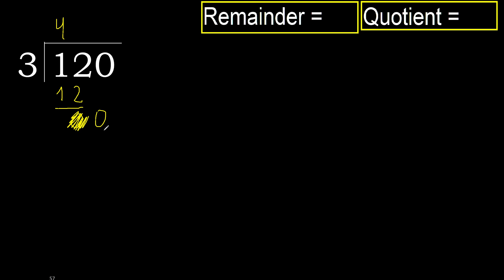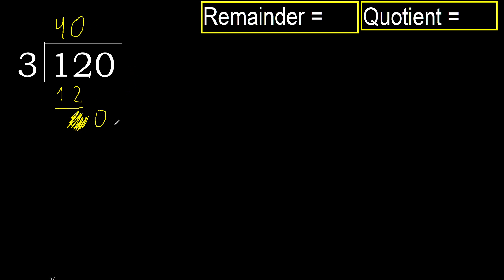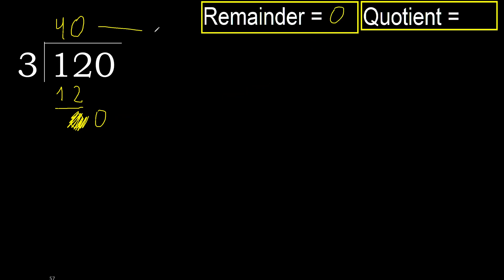0 is less, therefore next — that is not a number, therefore finish it here. Complete with 0, because here we finish it with this number. The answer is 40.